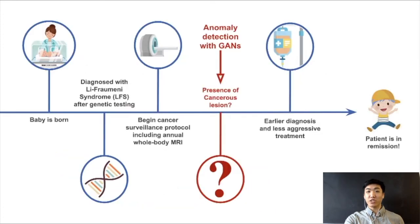When children are born with genetic conditions of cancer predisposition, they are encouraged to follow a well-established annual whole-body MRI screening protocol. Unfortunately, analyzing these images is very difficult for radiologists, and naive machine learning methods, which have shown promise in many imaging problems, are infeasible due to data scarcity and class imbalance.